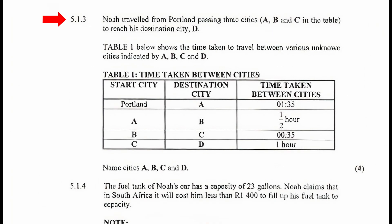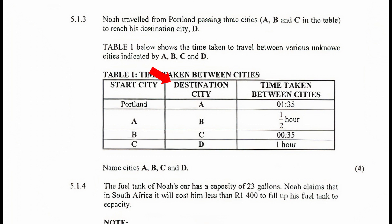5.1.3: Noah traveled from Portland, passing three cities A, B, and C in the table, to reach his destination city D. Table 1 shows the time taken to travel between various unknown cities indicated by A, B, C, and D. The table has three columns: the first lists the start city, the second lists the destination city, and the third lists the time taken between cities. We are instructed to name the cities A, B, C, and D.